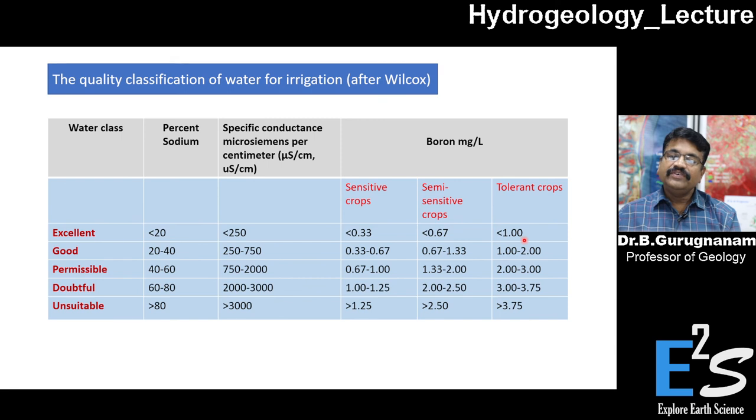For the tolerant crop, if it is less than 1, 1 to 2 is good, 2 to 3 is permissible, 3 to 3.75 is doubtful, and more than 3.75 is unsuitable with respect to boron concentration represented in milligram per liter. This is how the Wilcox diagram has been used for categorizing or classifying the water into its uses for irrigation purposes.